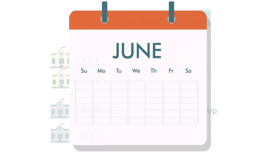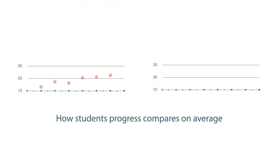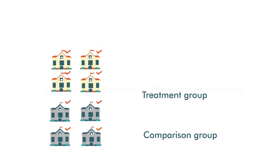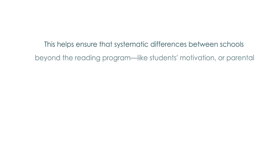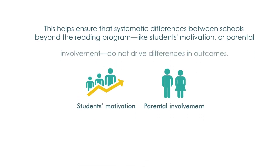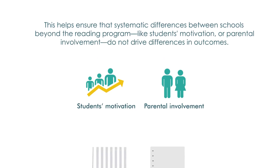After a few months, researchers measure reading skills between the two groups to see how they compare on average. Because the schools were randomly assigned, other factors influencing students' skills are likely to be evenly distributed across the two groups, not concentrated in one group or the other. This helps ensure that systematic differences between schools beyond the reading program — like students' motivation or parental involvement — do not drive differences in outcomes.